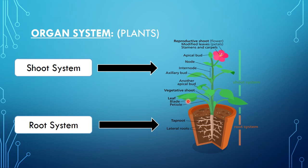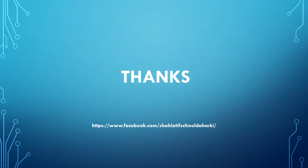Here is the root system. In the root system, there are roots — tap root and lateral roots. The difference between them is that tap root is a thick, main, primary root that emerges first. Lateral roots are those which grow from the tap root. Thanks for watching this video. You may visit our website — the link is here.